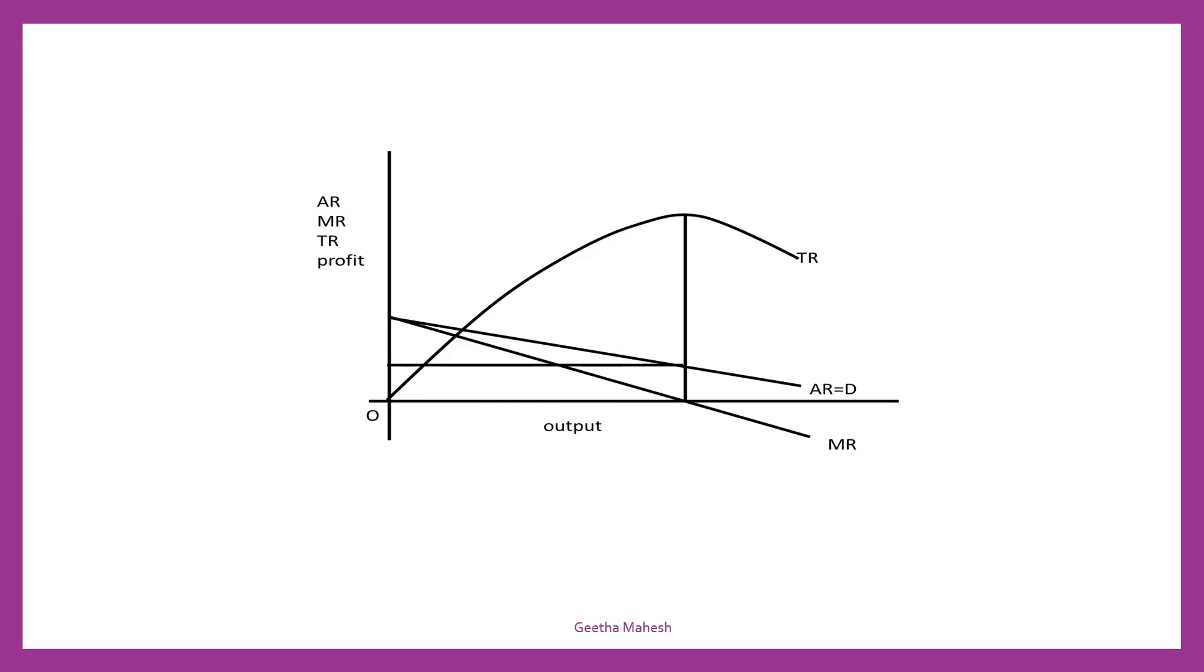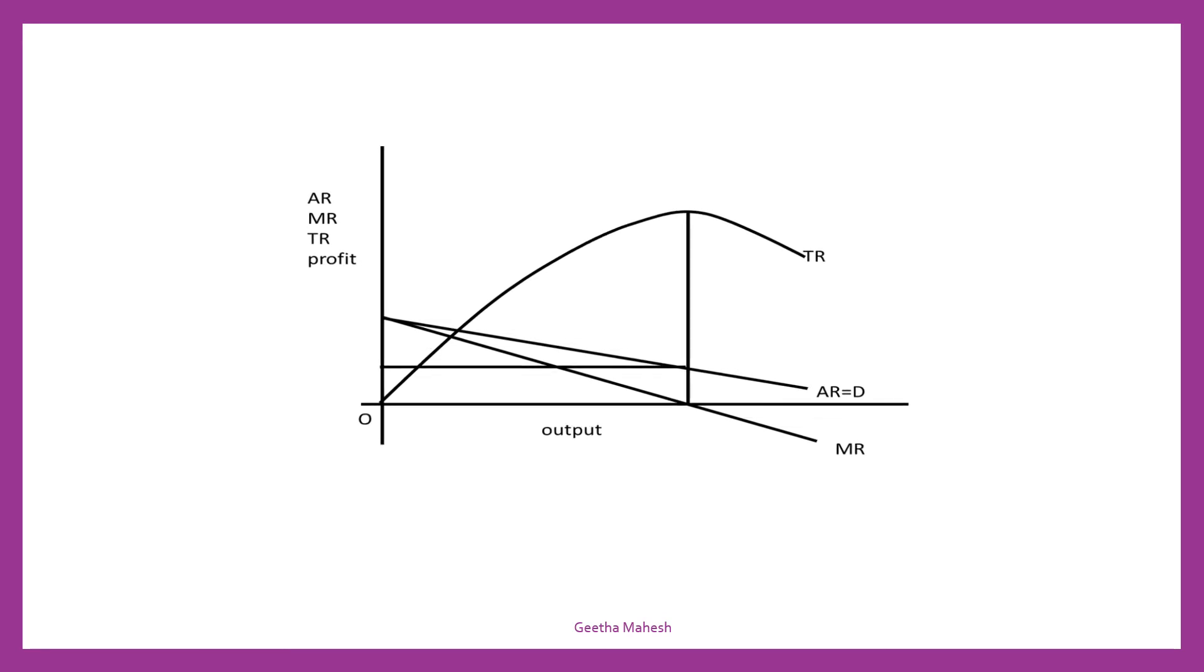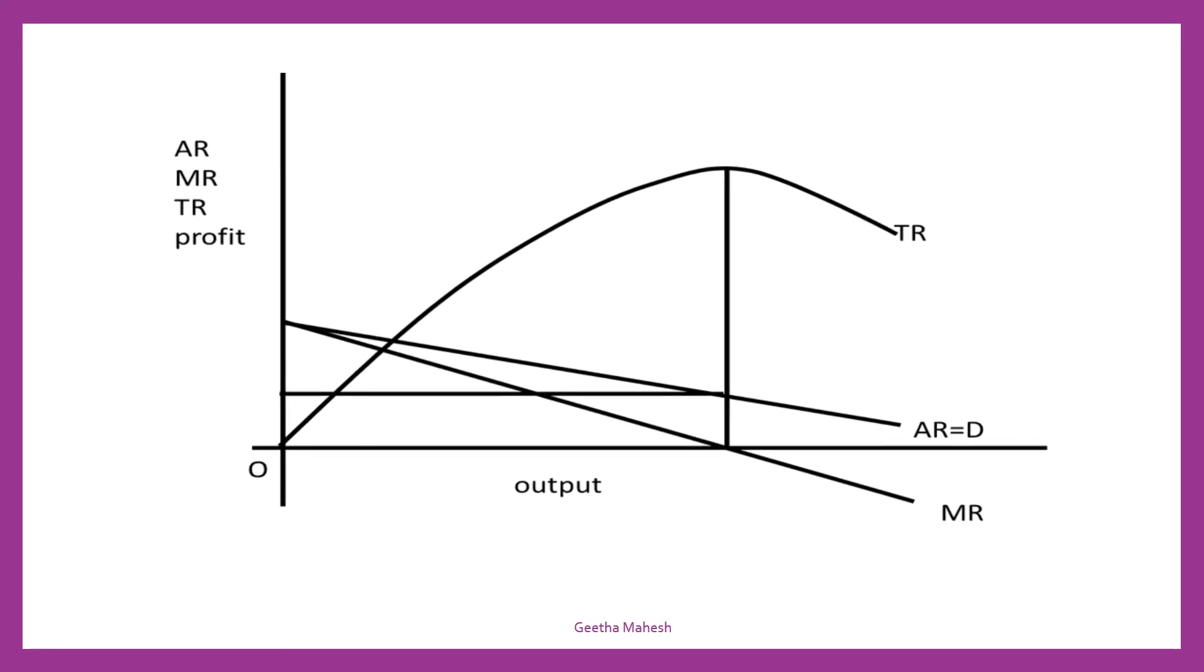Dear students, let us understand short run equilibrium of a monopoly firm with the help of a diagram in case of zero cost. On x-axis, output is measured. On y-axis, average revenue, marginal revenue, total revenue, and profits are measured.